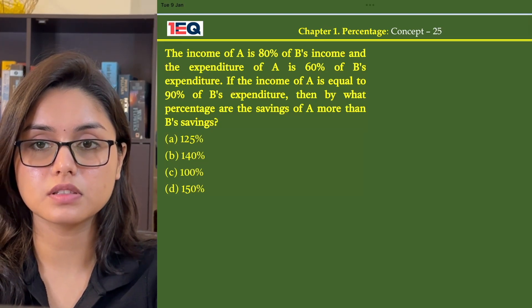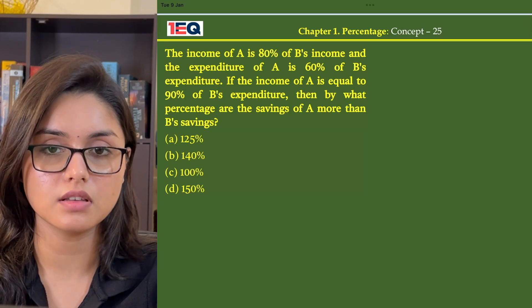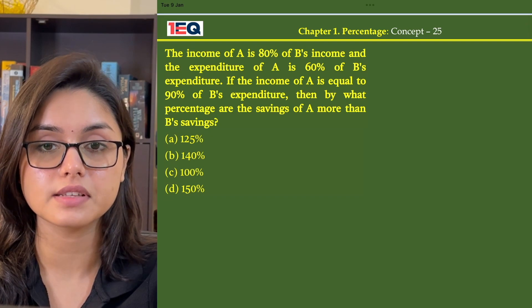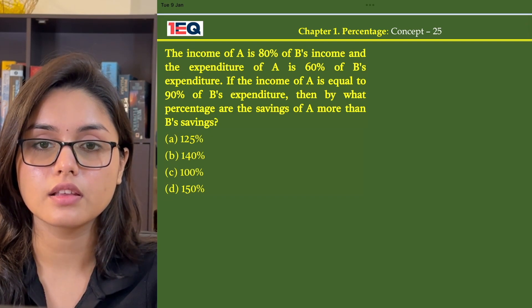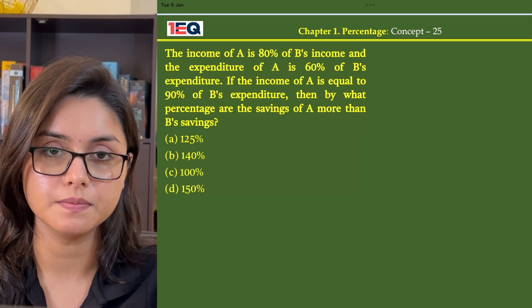The income of A is 80% of B's income and the expenditure of A is 60% of B's expenditure. If the income of A is equal to 90% of B's expenditure, then by what percentage are the savings of A more than the savings of B?